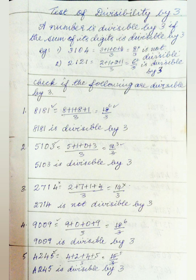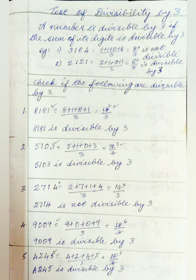The next is the Test of Divisibility by 3. A number is divisible by 3 if the sum of its digits is divisible by 3. For example, 3104: 3+1+0+4 = 8, and 8 is not divisible by 3, so 3104 is not divisible by 3. Second example: 2121: 2+1+2+1 = 6, and 3 goes into 6 twice, so 2121 is divisible by 3.